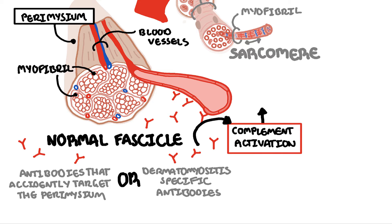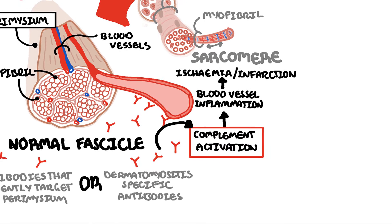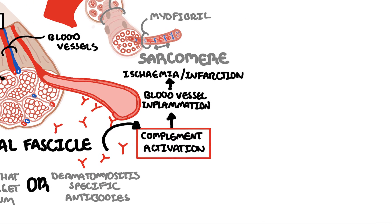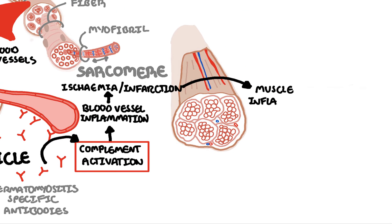what is seen as a result of complement activation is blood vessel inflammation and destruction around the fascicle, leading to ischemia and infarction of the muscle tissue, which then in turn leads to muscle inflammation and muscle atrophy.